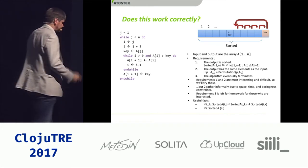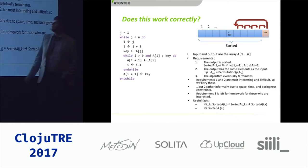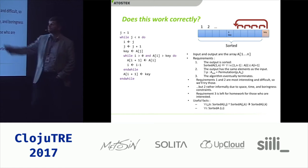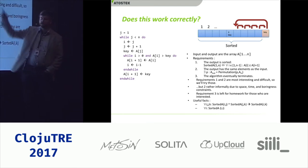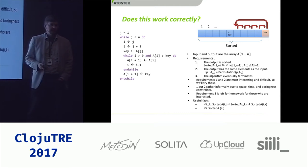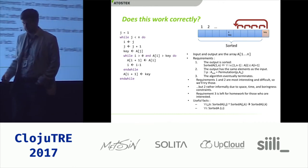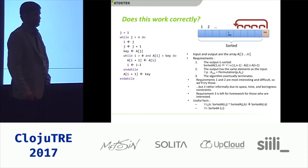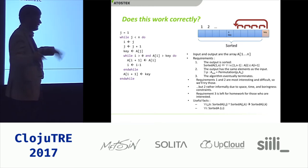Does this work correctly? Let's pull out some mathematics. I've formulated some criteria the sorting algorithm should fulfill: first, the output should be sorted; second, the output should be a permutation of the input — otherwise we might accidentally accept an algorithm that just resets the array to zeros; and third, it should eventually terminate. Since this is a lot, I'll try number one seriously, number two with hand-waving, and number three not at all.